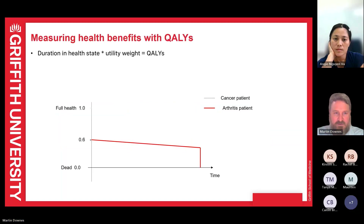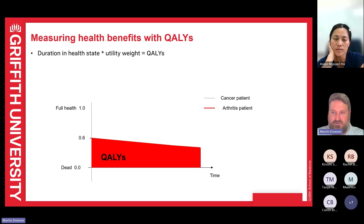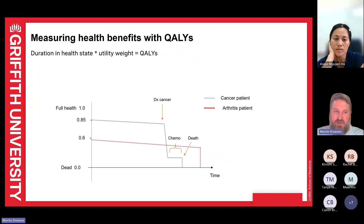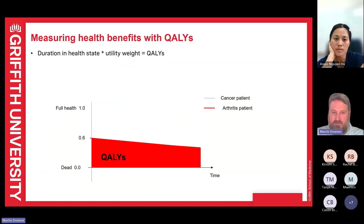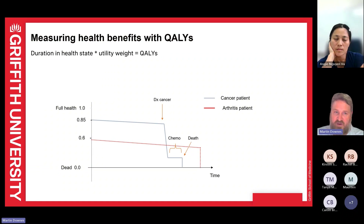To give an idea of QALY over time: an arthritis patient getting worse over time sees their QALY reducing. For a cancer patient, they might have pretty good quality of life, get diagnosed with cancer, undergo chemotherapy, and may die. We're trying to compare the total QALYs across different patient populations — the QALYs here versus the QALYs there might actually be quite similar when looked at overall, and that's how we compare the benefits of quality of life across different patient populations.